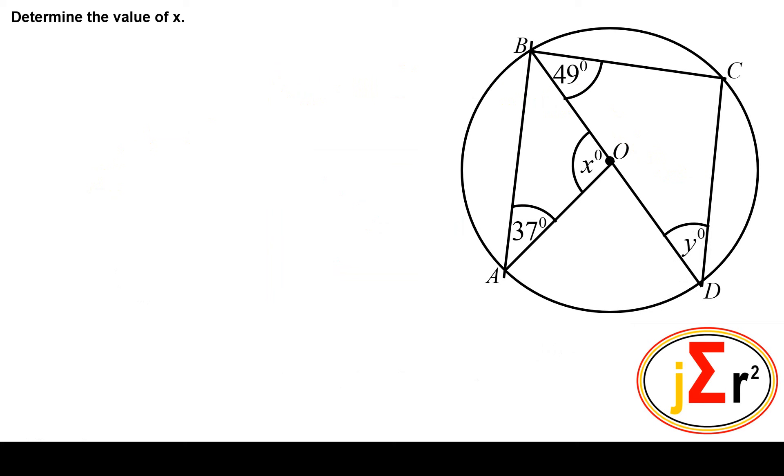Determine the value of x. Triangle OAB contains two radii. We need to find the value of this angle x. This triangle of which this angle is a part is isosceles because two of its sides are radii of the circle.